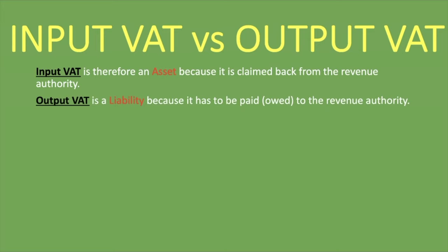Output VAT, on the other hand, is a liability because it has to be paid — it's owed to the revenue authority. When you're charging someone for your goods and services as a VAT vendor, even though you'll be collecting that money, the output VAT portion does not belong to you; it has to go to the revenue authority. If your customers return goods to you, you would also reverse the VAT portion. But output VAT will always be a liability.